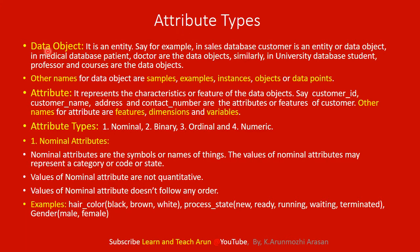First, we will talk about Data Object. A Data Object is an entity. For example, if you have a sales database, it will be an entity. If you have a bank, it will be an entity. If you have a medical database or a patient, it will be an entity. Usually, an entity is a thing or real-world object.